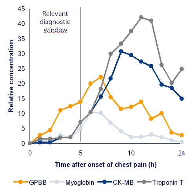A biomarker can be any kind of molecule indicating the existence, past or present, of living organisms. In the fields of geology and astrobiology, biomarkers versus geomarkers are also known as biogeology. The term biomarker is also used to describe biological involvement in the generation of petroleum.